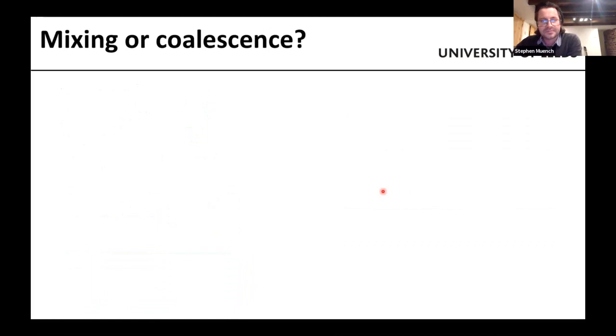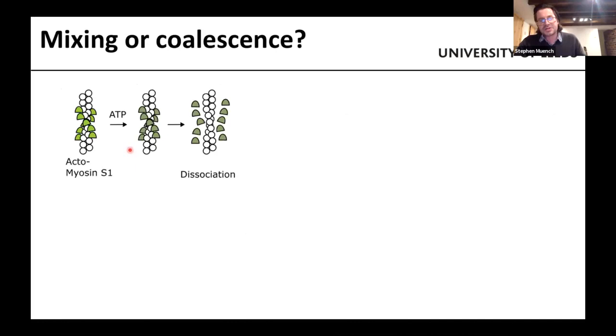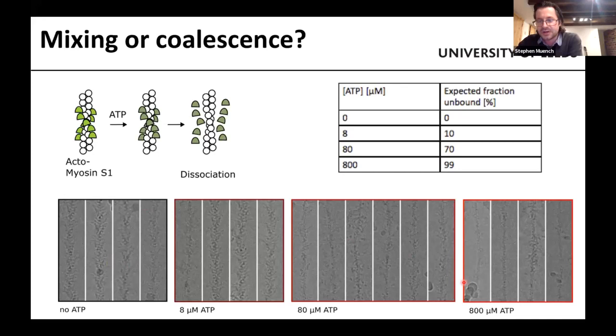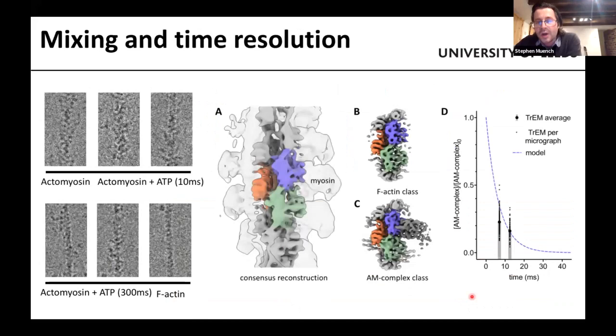So the workhorse for us has been this actin-myosin S1 complex. So what we have here is a filament which is decorated with the S1 complex. Then this dissociates off in the presence of ATP. And we know the system really well. And in the presence of different ATP concentrations, we get different dissociation at 10 milliseconds. So 10 milliseconds in 800 micromolar ATP, we expect 99% dissociation. And when we do the experiments, we see just that. So no ATP, full decoration, 800 micromolar ATP, no decoration of the S1 domain. And the grid was made within 10 milliseconds. So there's clearly been mixing at the appropriate time scale.